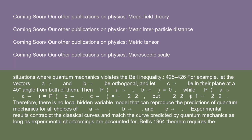For example, let vectors a and b be orthogonal, and let c lie in their plane at a 45-degree angle from both of them. Then P(a,b) = 0, while P(a,c) = P(b,c) = −√2/2. But √2/2 is neither less than nor equal to 1 − √2/2. Therefore, there is no local hidden variable model that can reproduce the predictions of quantum mechanics for all choices of a, b, and c.